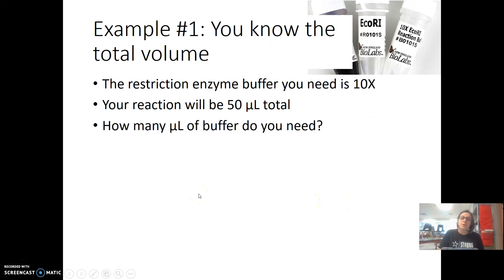For the ones where you do know the total volume, you would be setting up an experiment or making a solution. So in this instance, I'm just talking about maybe doing a restriction enzyme digest. So the restriction enzyme buffers say 10X on them, so they are 10 times concentrated. We would know by looking at the protocol what the total volume of the reaction would be. In this case, it says 50 microliters total. So you would need to figure out how much of this buffer you would need in microliters.